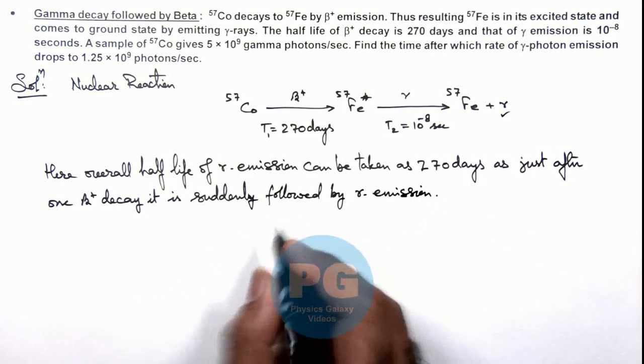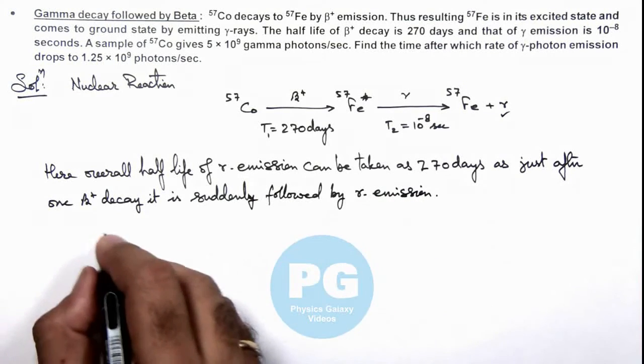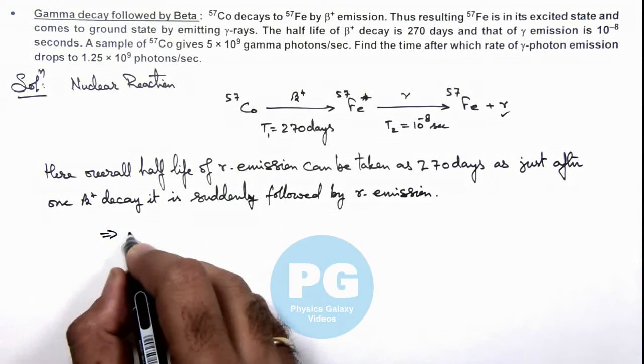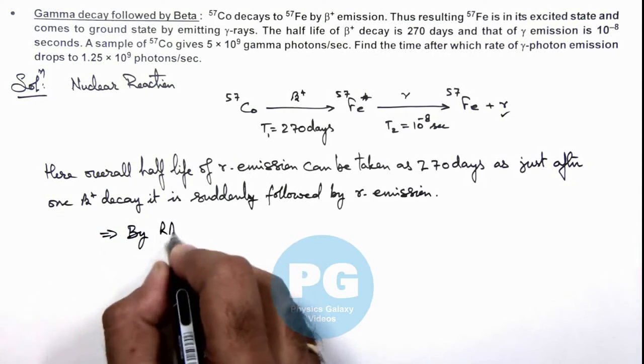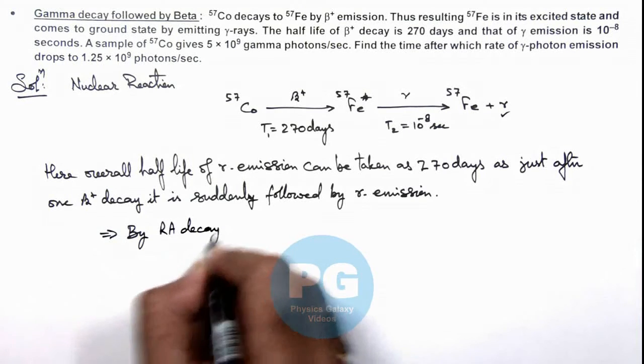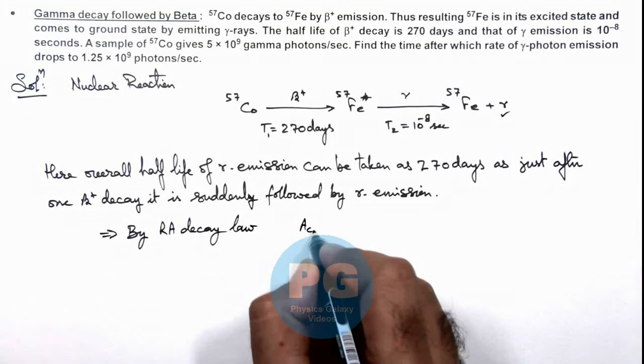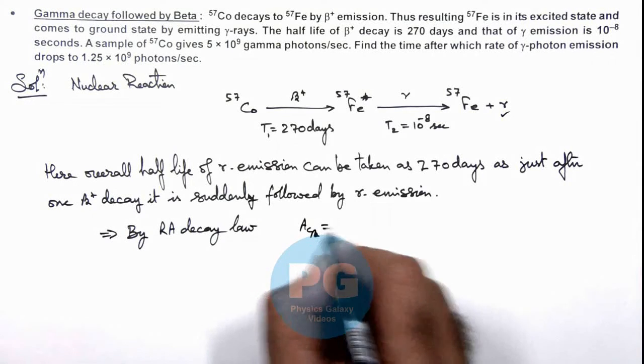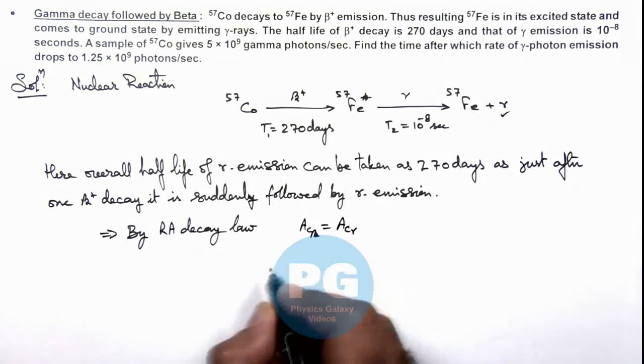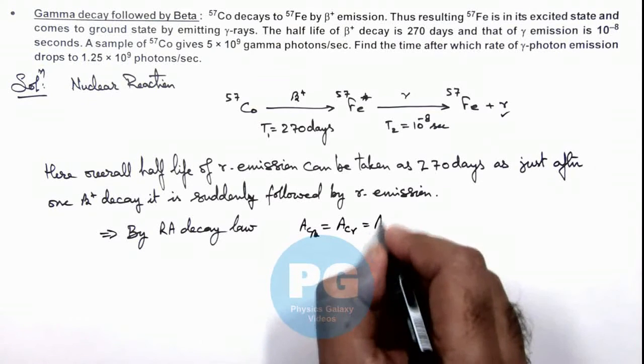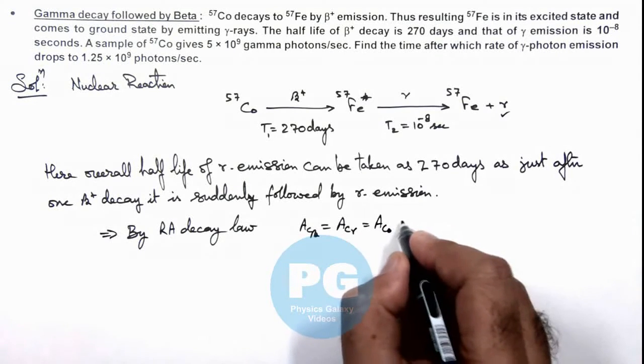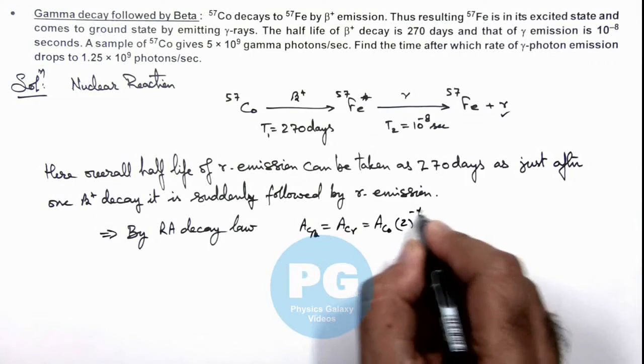So here we can use decay law. So we can write, by radioactive decay law, we can write: activity of beta is same as activity of gamma, which is equal to initial activity multiplied by 2 to the power minus t by T.